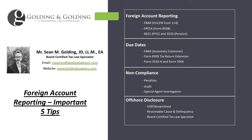Tip three: you may have to file multiple forms for the same account. A common example is the FBAR and the 8938 — there's a lot of overlap. A foreign pension, for example, is reported on both. Some people think that because they filed the 8938 or the FBAR, they don't have to file the other form for that same account or asset — that's incorrect. You may have to file different forms for the same account or asset.